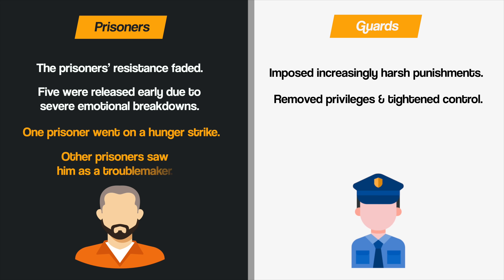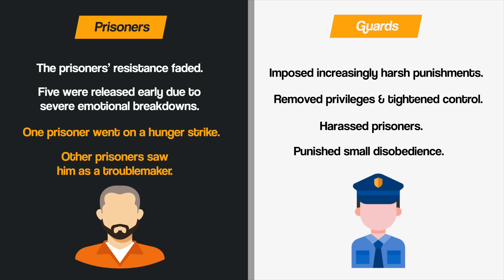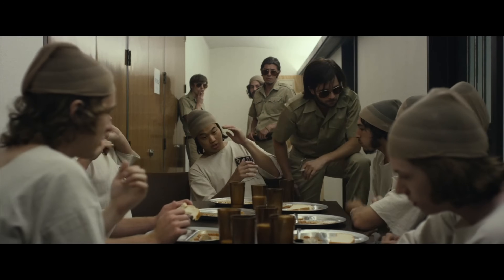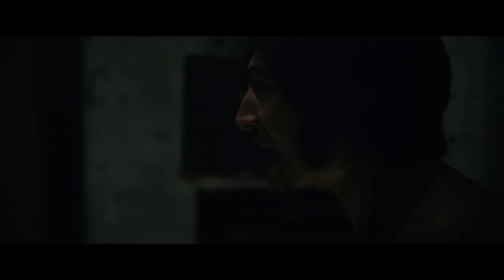One prisoner went on a hunger strike, but rather than support him, the other prisoners saw him as a troublemaker. The guards adapted rapidly to their roles — they harassed prisoners, conducted midnight roll calls, and punished even small disobedience. One guard locked a prisoner in solitary confinement overnight.